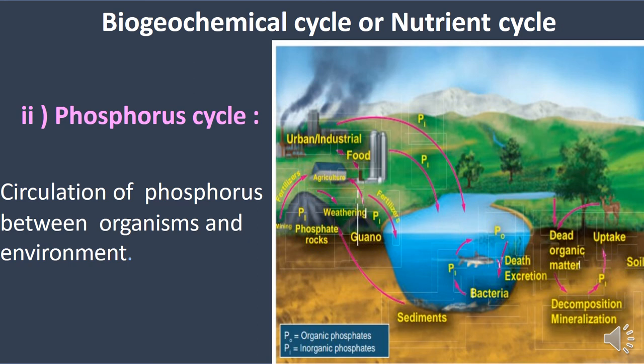Cycling of materials is very important in an ecosystem — we cannot imagine life without it. Respiration and photosynthesis maintain the atmospheric carbon dioxide balance. Cycling of materials is important for the growth and development of all organisms.